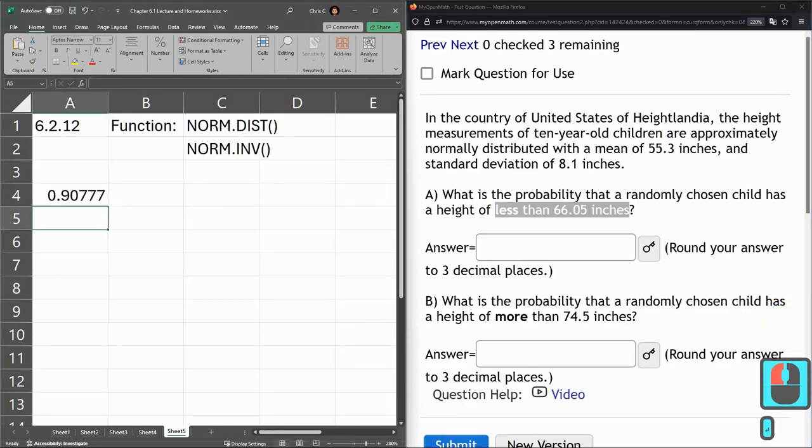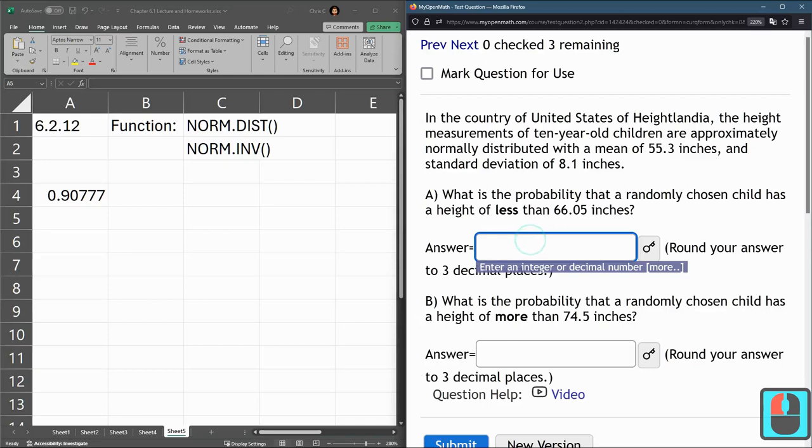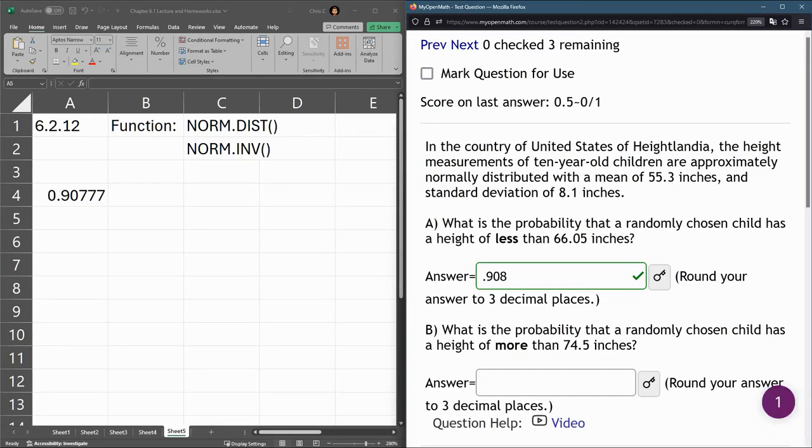Now we can hit enter. I do want to round to three decimals. So it's 0.908. You round that up, and let's hit submit. All right, so we got that one.